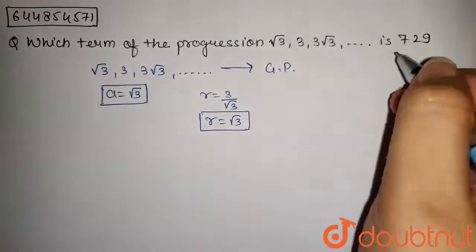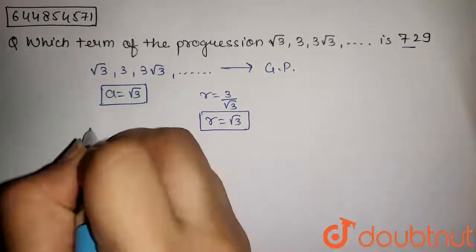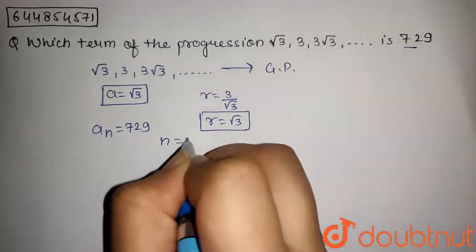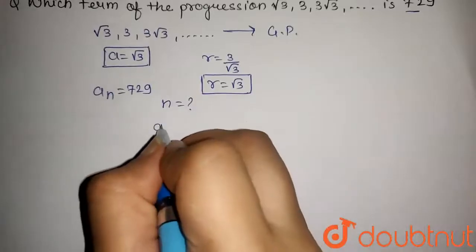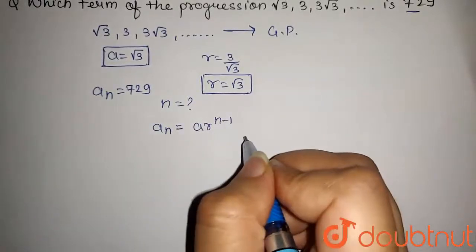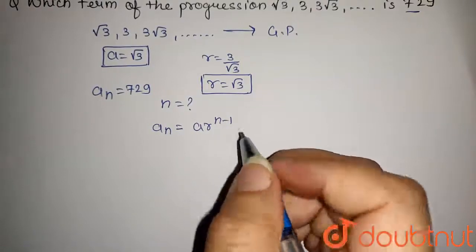Now we have given that the nth term is 729 and we have to find the value of n. We know that aₙ = a·r^(n-1), this is the general term of GP.